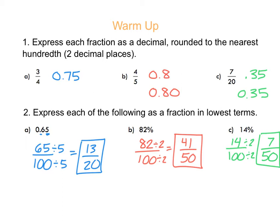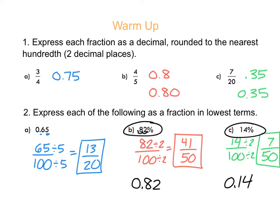Just a quick reminder: if you want to switch a percent to a decimal, you can just move the decimal point two places to the left. For example, 82% — the decimal point is after the 2. Move it two spots to the left and that is 0.82. And 14% as a decimal would be 0.14. So we're going to be converting between percents, fractions, and decimals a lot as we do probability calculations.